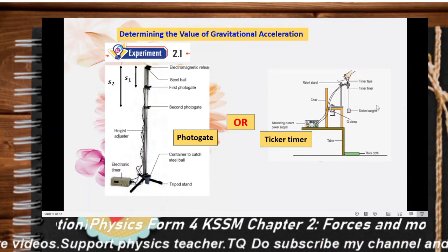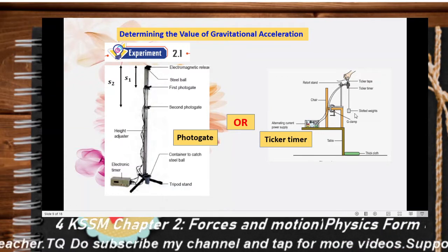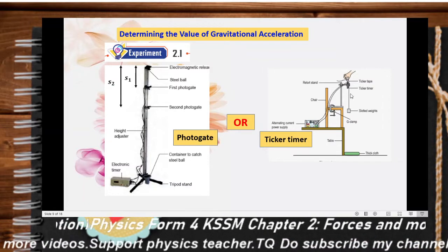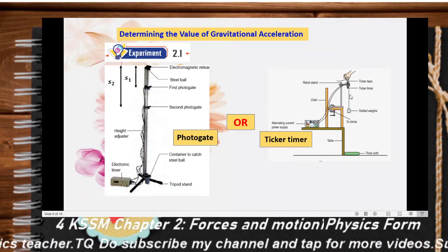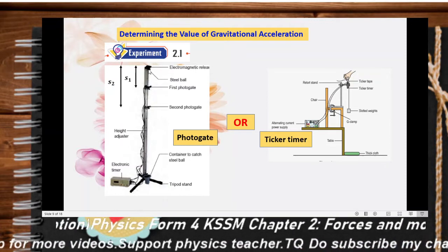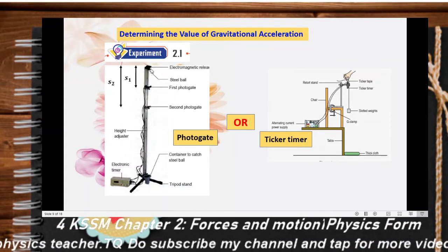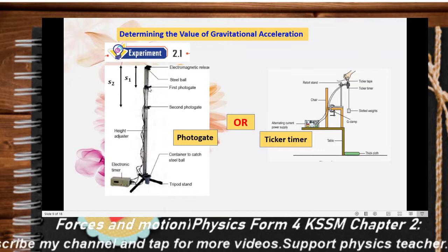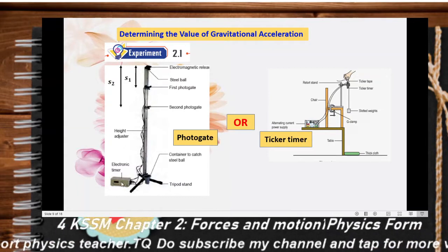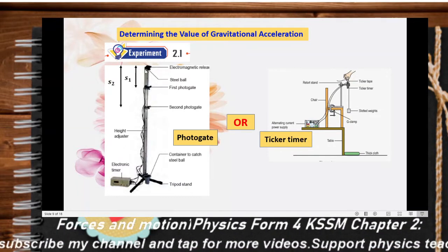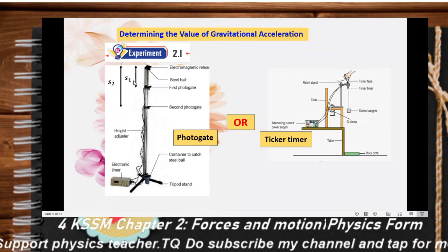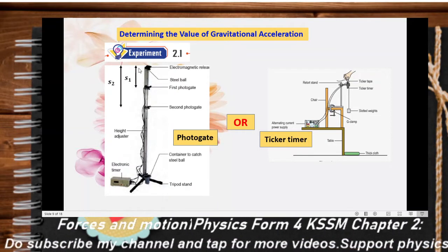We discussed the ticker timer earlier in linear motion to determine acceleration, so we can also use it to determine the acceleration of a falling object from the ticker tape. In this experiment, however, we will use a photogate. The apparatus needed includes a steel ball with an electromagnetic release, two photogates — a first and a second — connected to an electronic timer to record time.